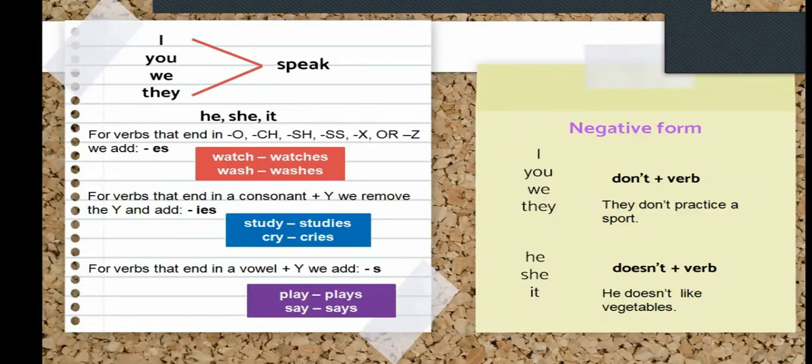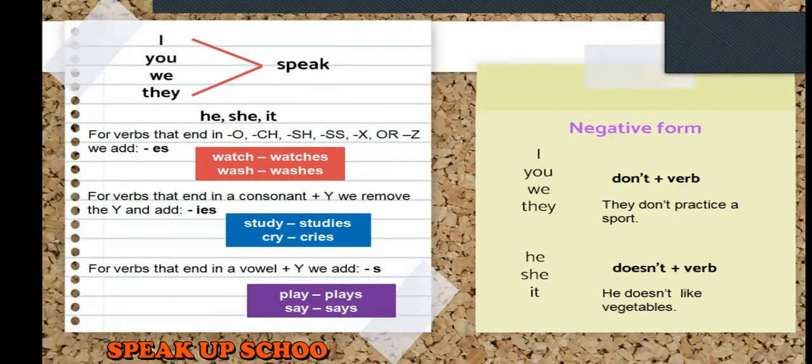So, if you remember, when we talk about an affirmative sentence in present simple, when we use the subject or the pronouns I, you, we, they, the verb that we use is in the base form. For example: speak, or play, or watch, or eat, or drink.